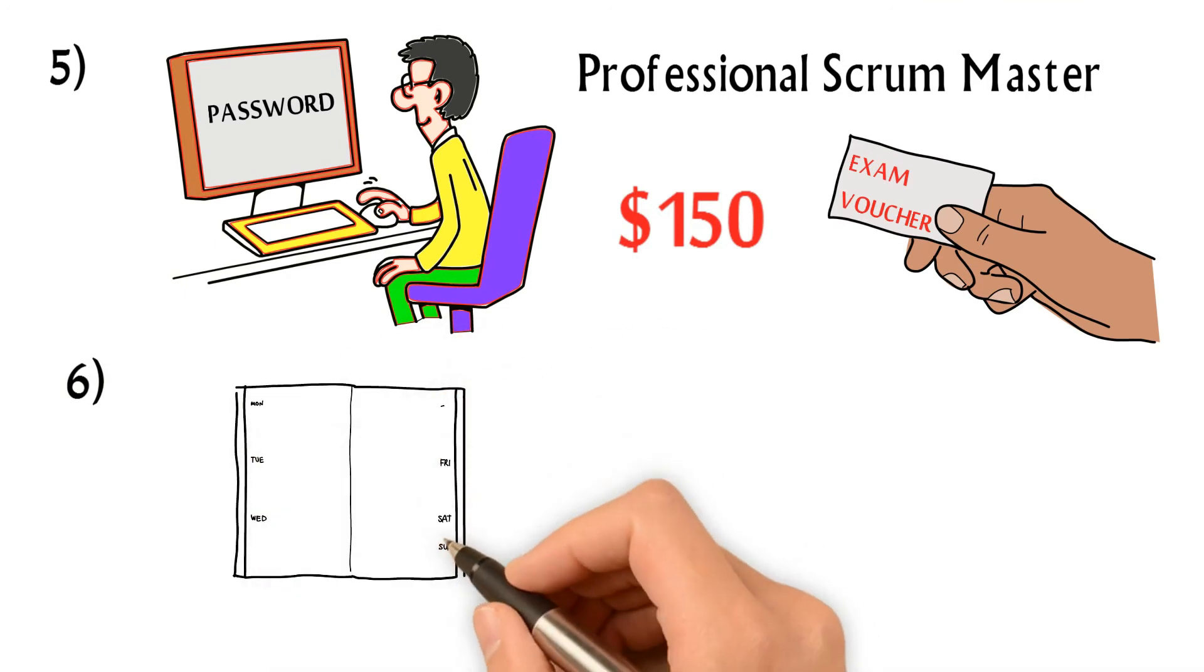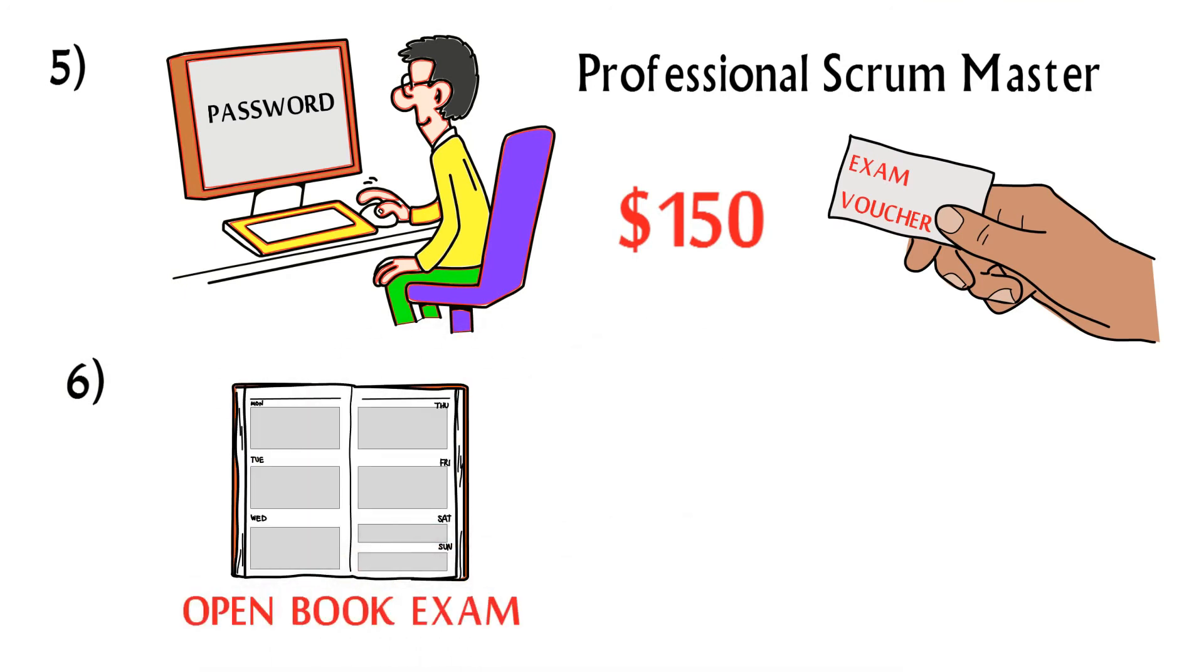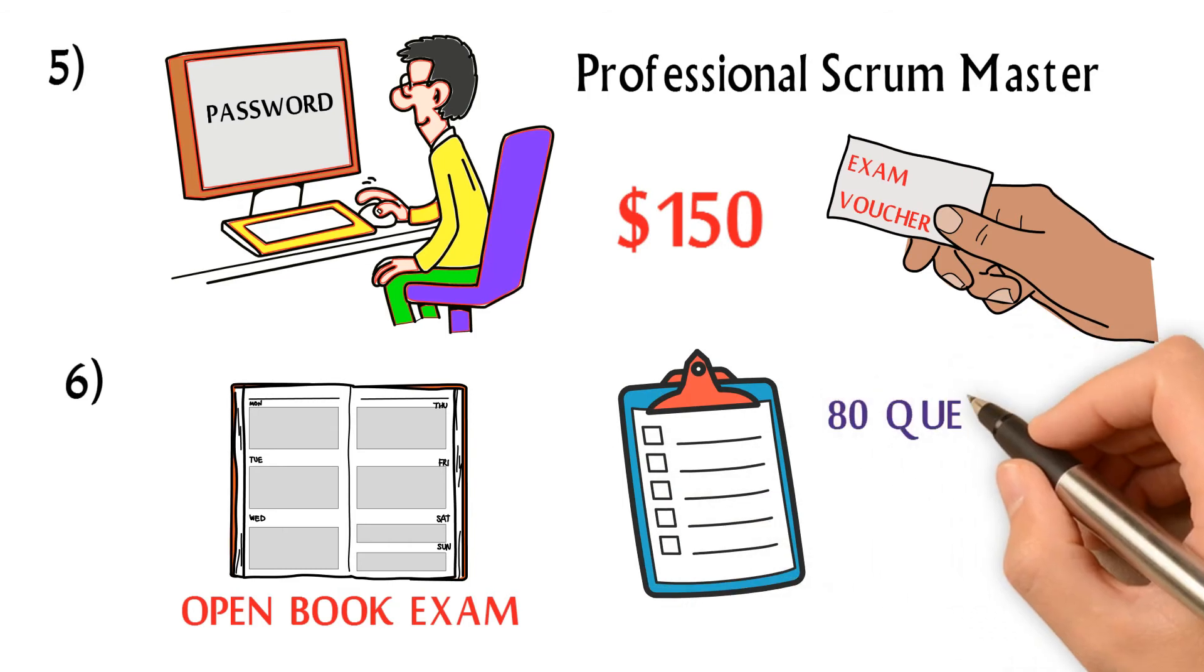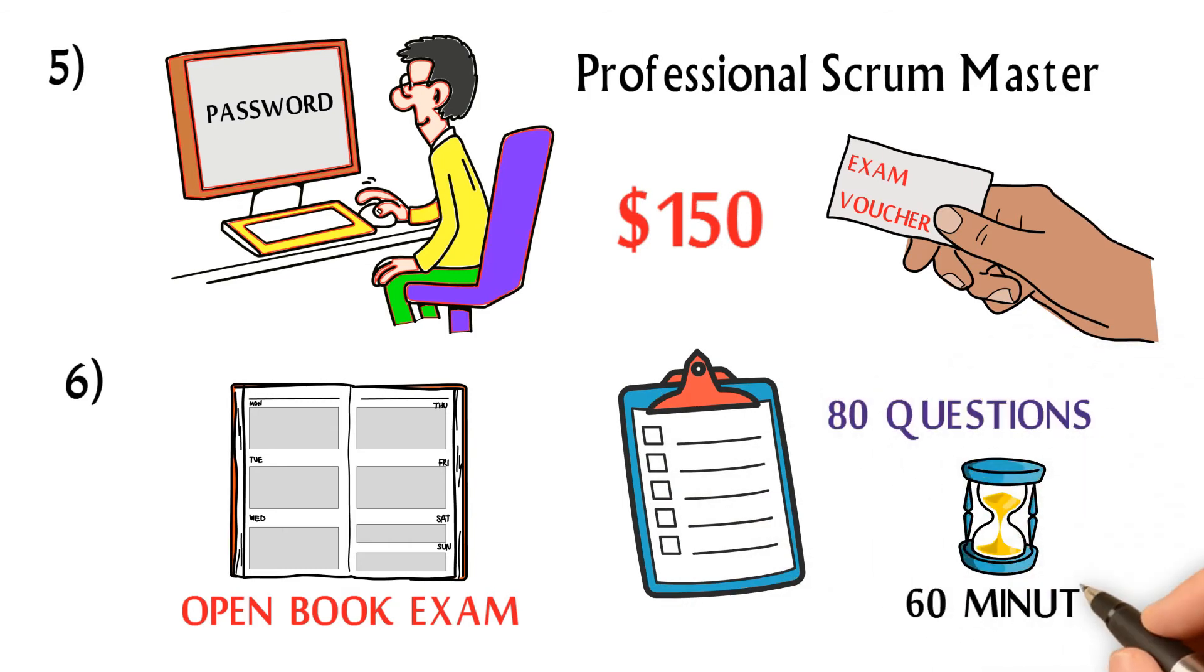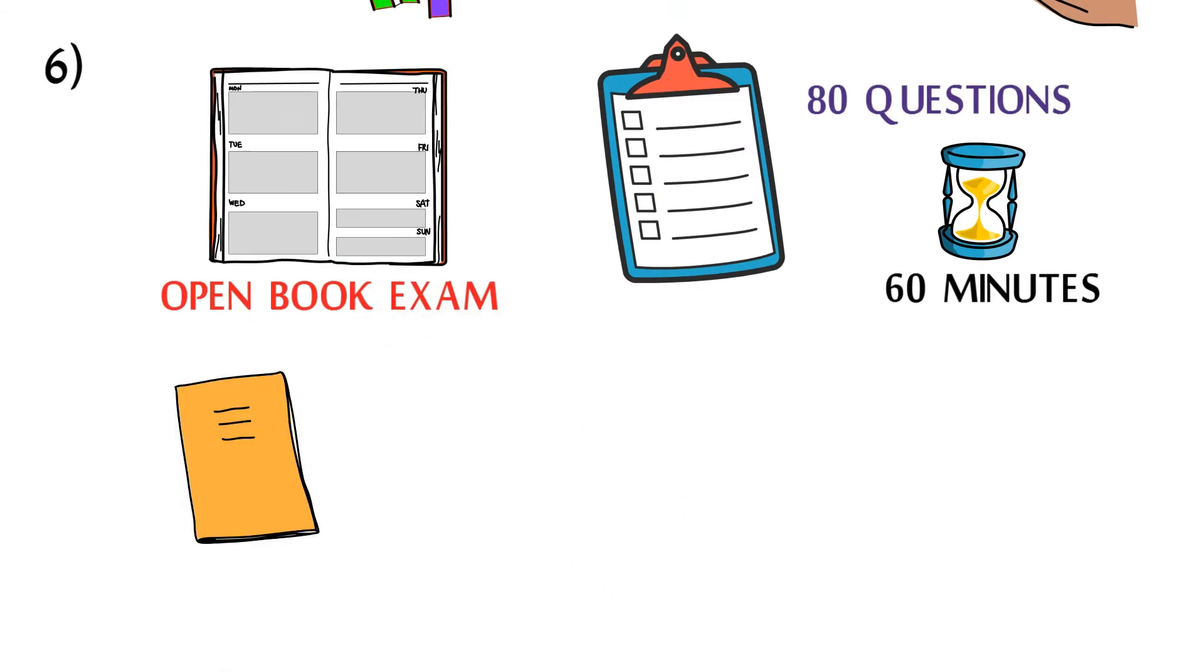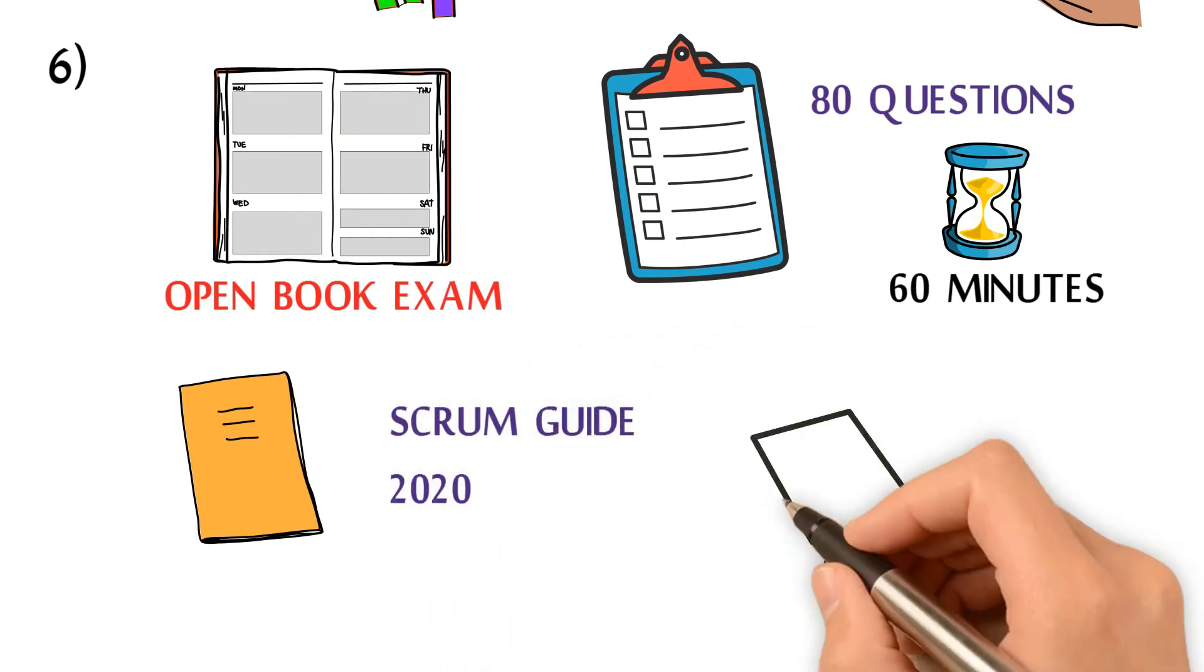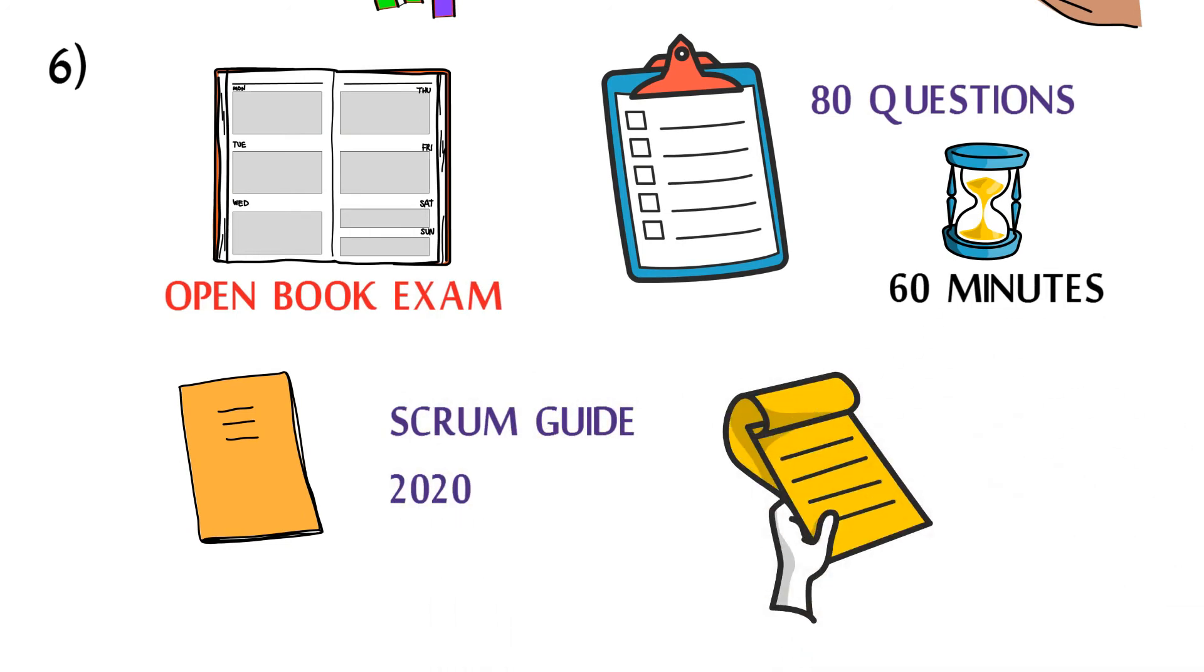Six, the exam is an open book exam with 80 questions to be answered in 60 minutes. However, you should be very familiar with the contents in Scrum Guide since you would have little time to read any materials while taking the exam.